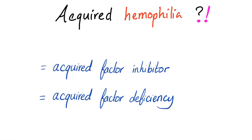Is there such a thing as acquired hemophilia? Yes, but we do not say acquired hemophilia — we say acquired factor inhibitor or acquired factor deficiency. These are antibodies against factor 8, factor 9, and factor 11 respectively. Do not say acquired hemophilia, because it gets confused with congenital hemophilia. If it's congenital, call it hemophilia. If it's acquired, call it acquired factor inhibitor — for example, acquired factor 8 inhibitor.